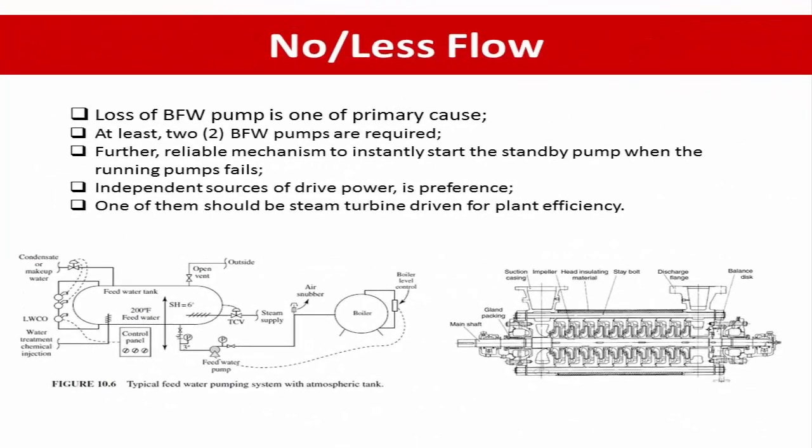No and less flow protection. During the HAZOP and draining design, loss of the boiler feed water pump is one of the typical causes that leads to no flow to the water or steam drum, resulting in further low level and dry-out in the steam or water drum. A typical chilling study requires at least two boiler feed water pumps with an independent source of driving power.